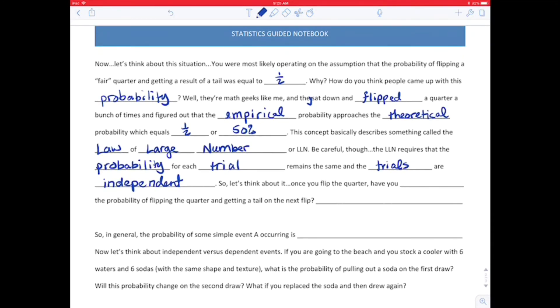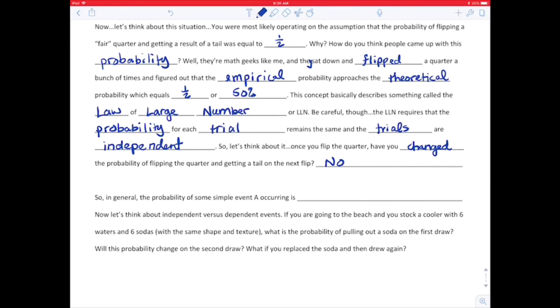So let's think about it. Once you flip the quarter, have you changed the probability of flipping the quarter and getting a tail on the next flip? No, right? Not unless you put gum on it or something, or weighted it, or had a double-sided coin, right? Okay. So in general, the probability of some simple event A occurring is the probability of A equals the number of ways A can occur over the total number of possible outcomes.